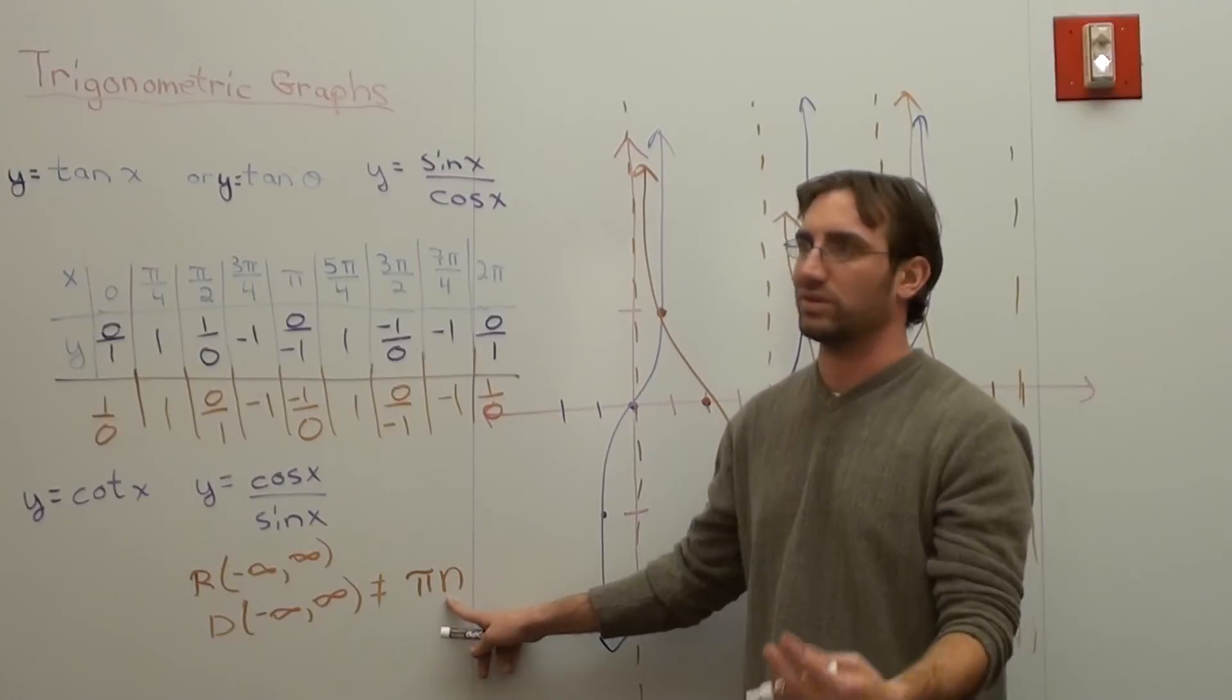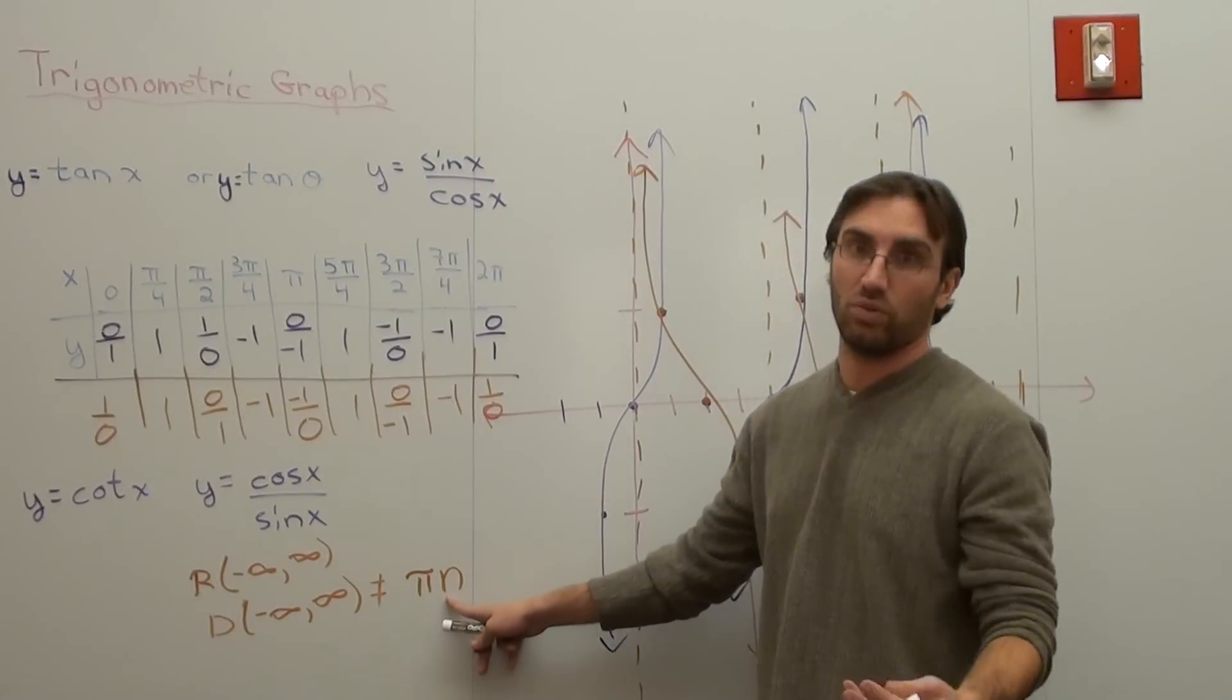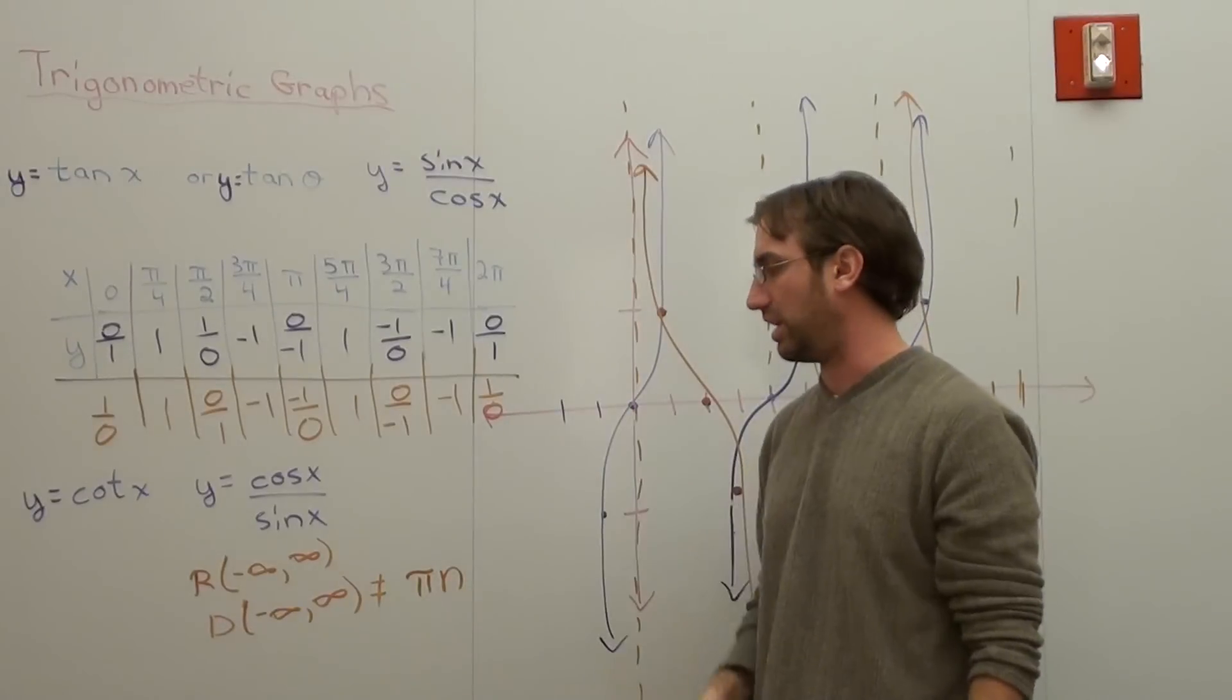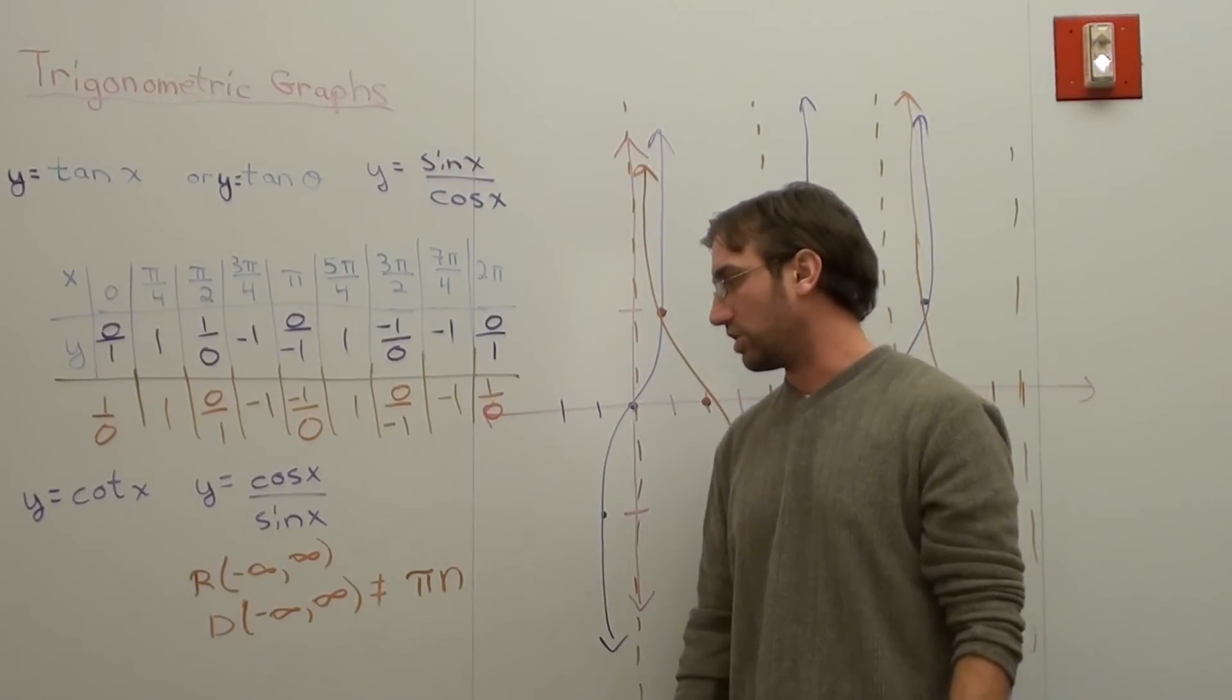So if n is 0, 0 times pi is 0. If n is 1, 1 pi, that's pi. 2 pi, 3 pi, negative 1 pi, negative 2 pi, etc. So that's your range and your domain.